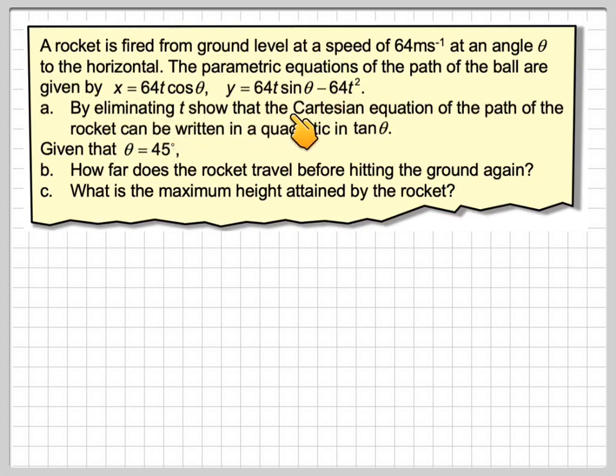By eliminating t, show that the Cartesian equation of the path of the rocket can be written in a quadratic in tan θ. Given that θ equals 45 degrees, how far does the rocket travel before hitting the ground again and what is the maximum height attained by the rocket?